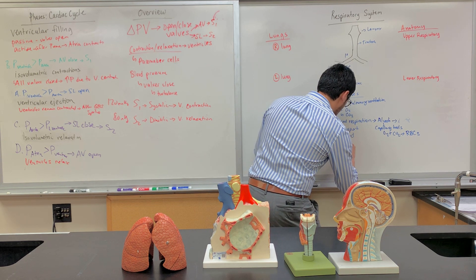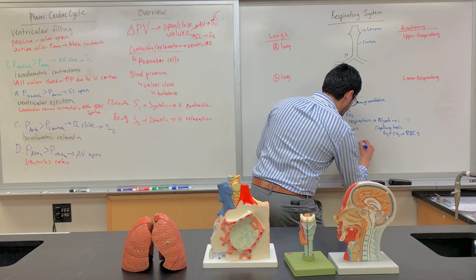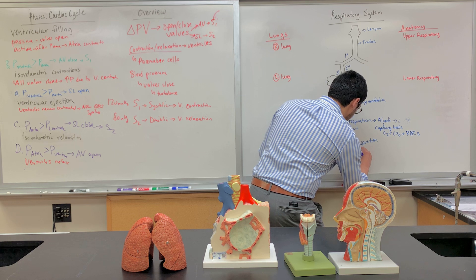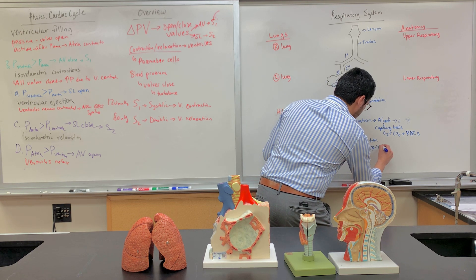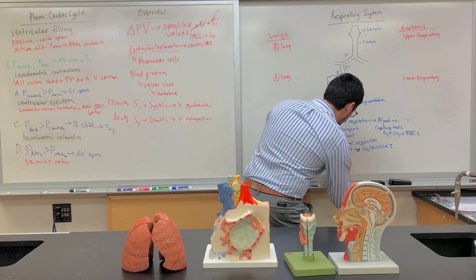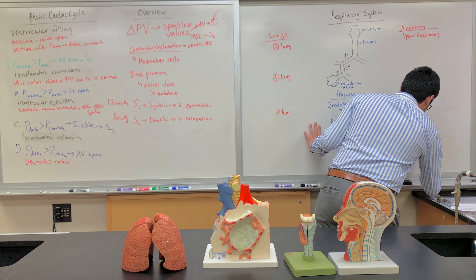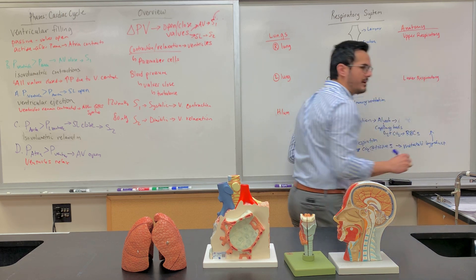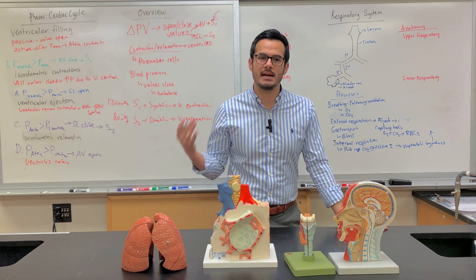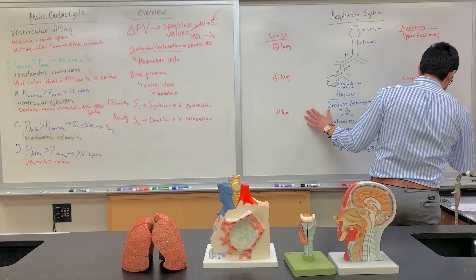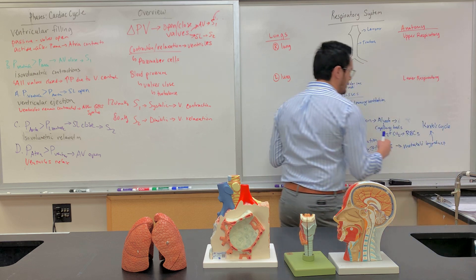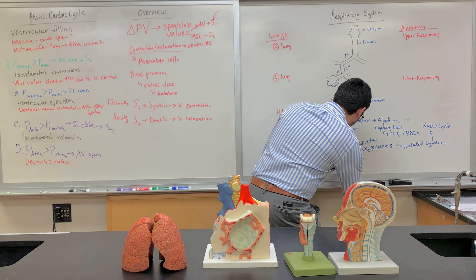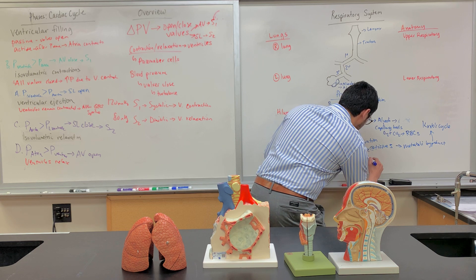The next process is internal respiration. Internal respiration includes picking up CO2 at the tissues — CO2 is a metabolic byproduct. Do you remember an example where CO2 is produced? During the Krebs cycle, CO2 is produced. We have to get that CO2 to the alveoli so we can breathe it out, and we're also dropping off oxygen at the tissues.